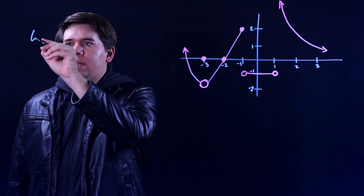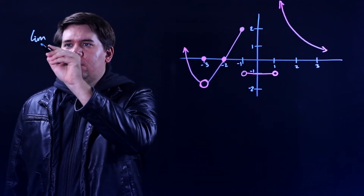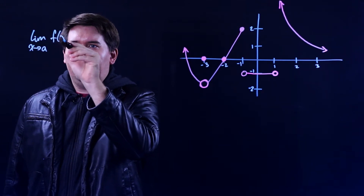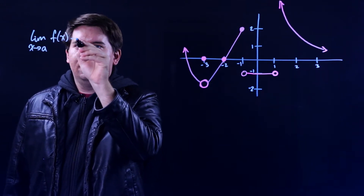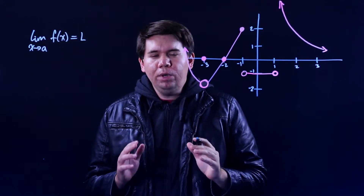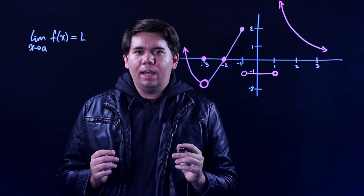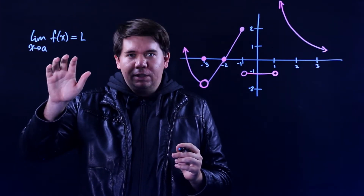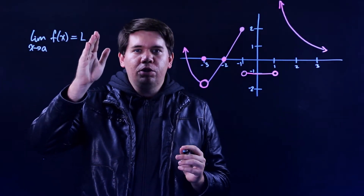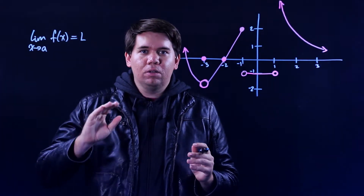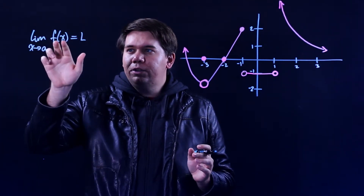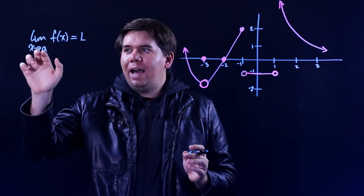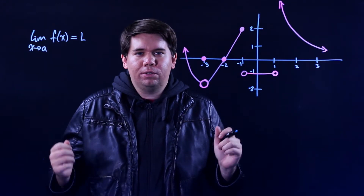When I say the limit as x approaches some value a of a function f of x is equal to l, we said that means that as x approaches a, your function is approaching the value l, or more precisely, your function becomes arbitrarily close to l for values of x sufficiently close to a.